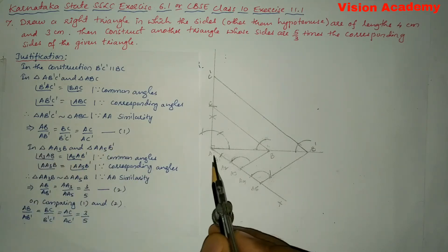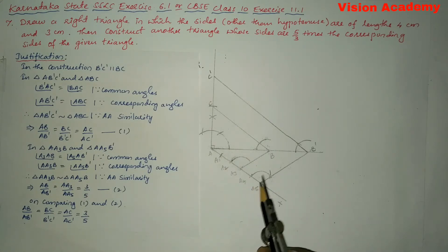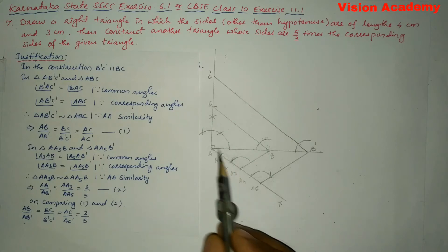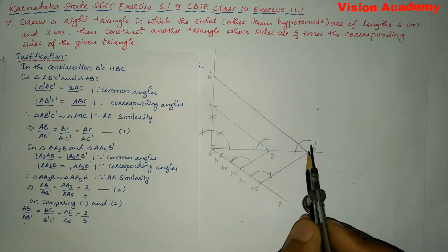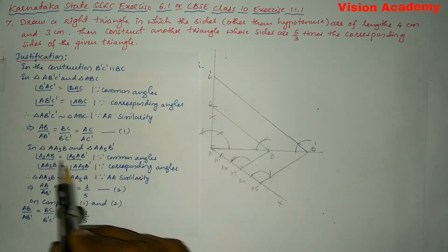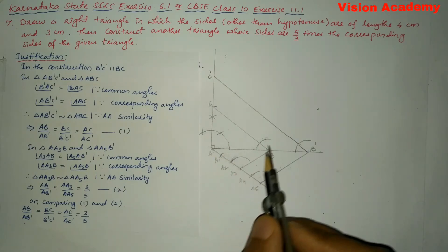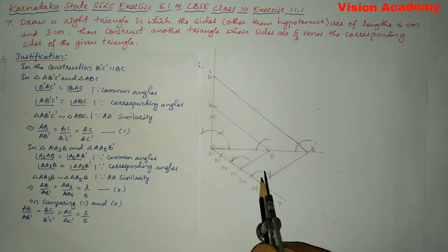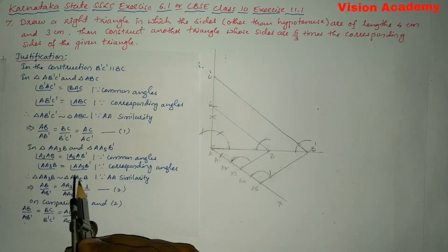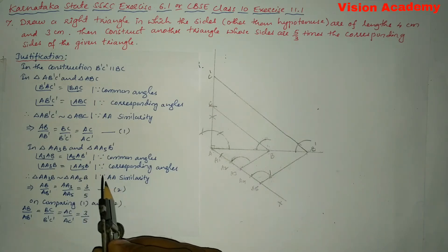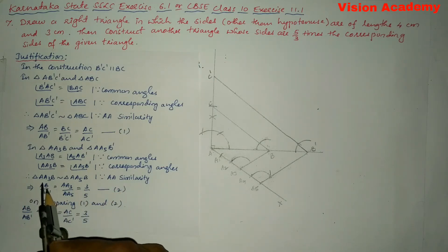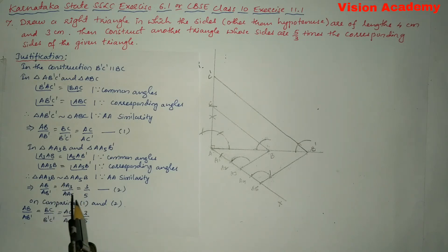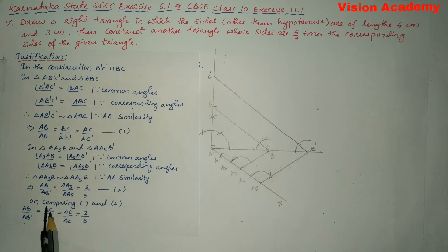In triangle AA3B and triangle AA5B', the angle at A is common. Also, angles AA3B and AA5B' are equal because both are corresponding angles. Therefore, triangle AA3B is similar to triangle AA5B' by the AA similarity criterion. This implies, as per the basic proportionality theorem, we can write: AB/AB' = AA3/AA5 = 3/5. On comparing equation 1 and equation 2, we get: AB/AB' = BC/B'C' = AC/AC' = 3/5.